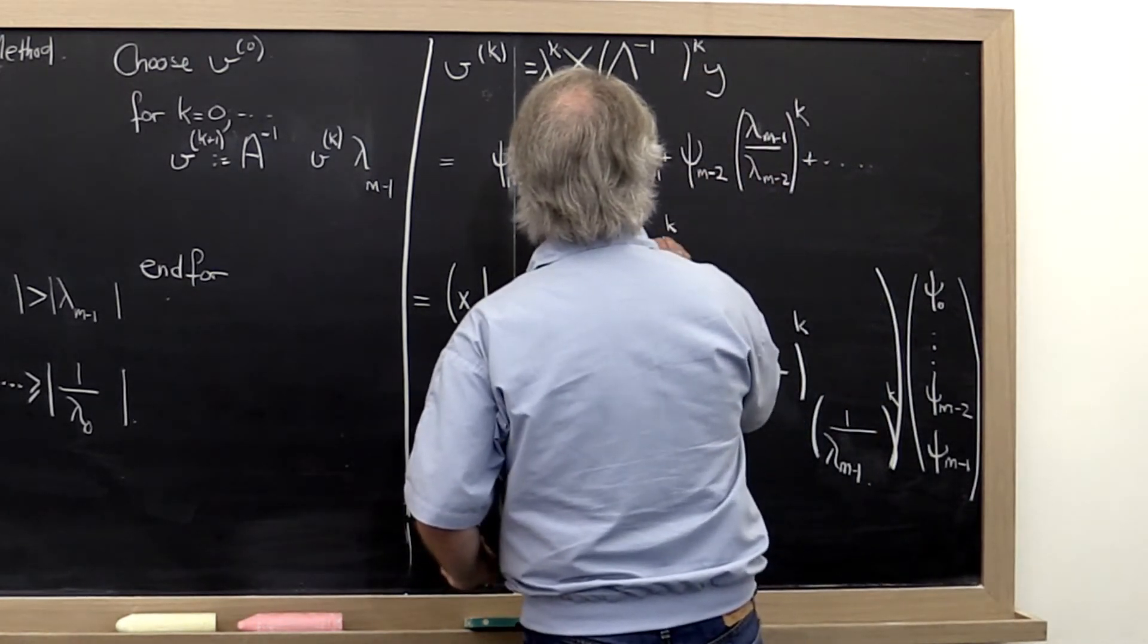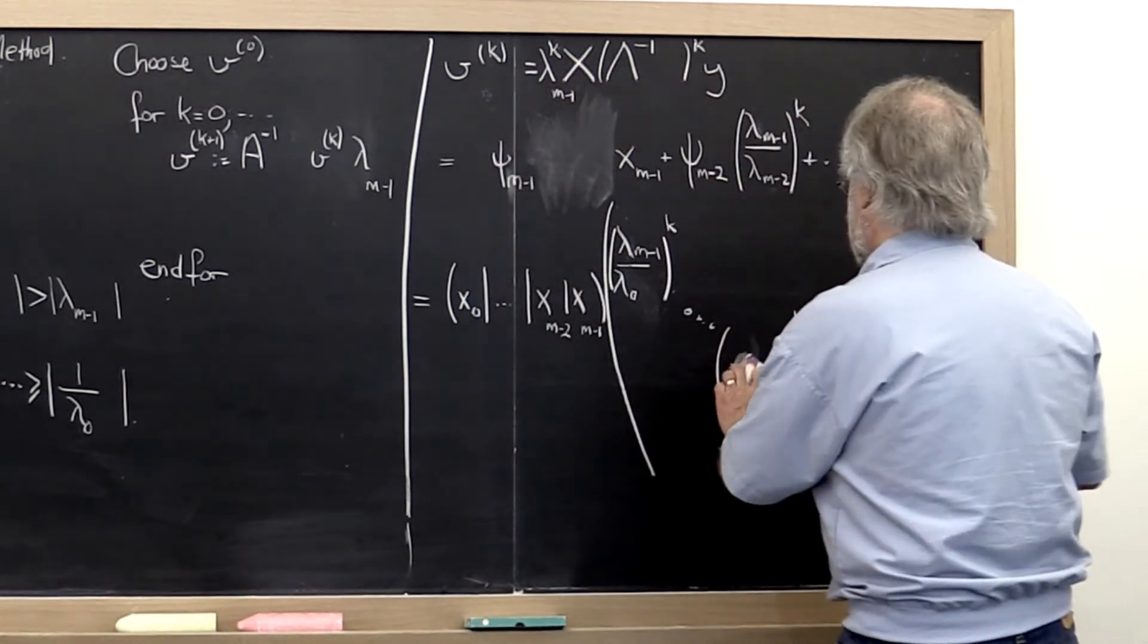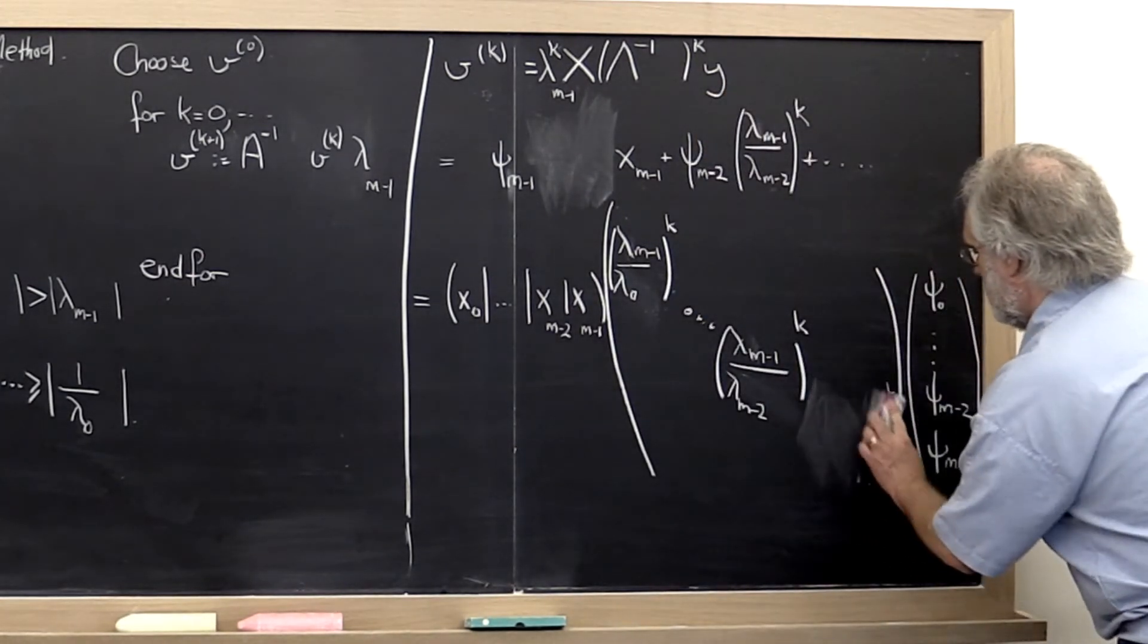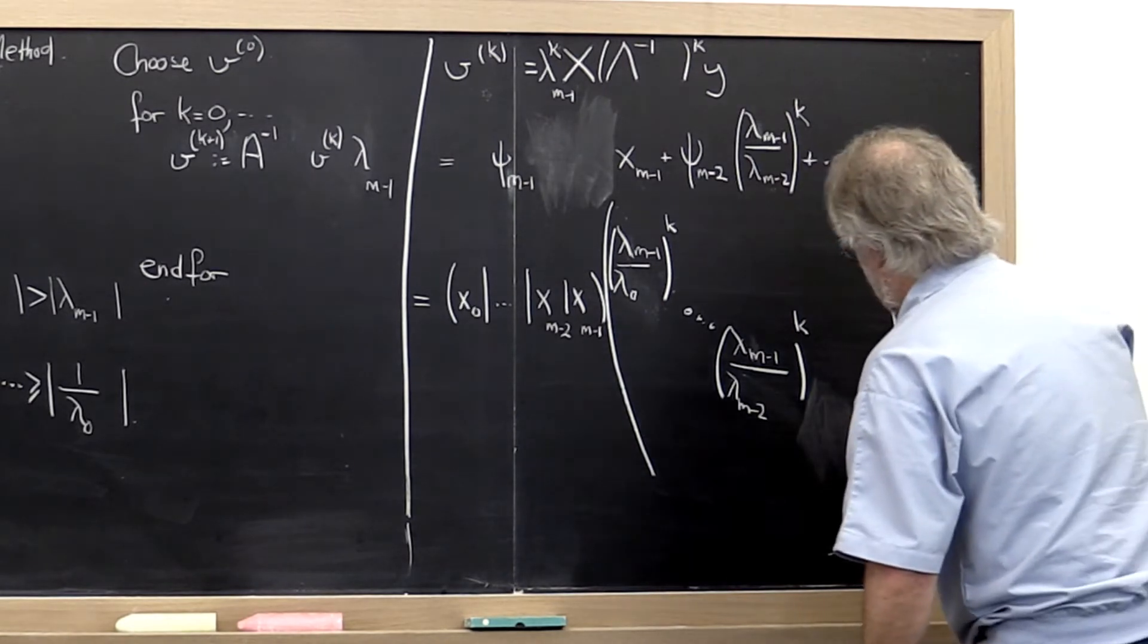We get lambda m minus 1, lambda m minus 1, and then this term right here becomes 1.